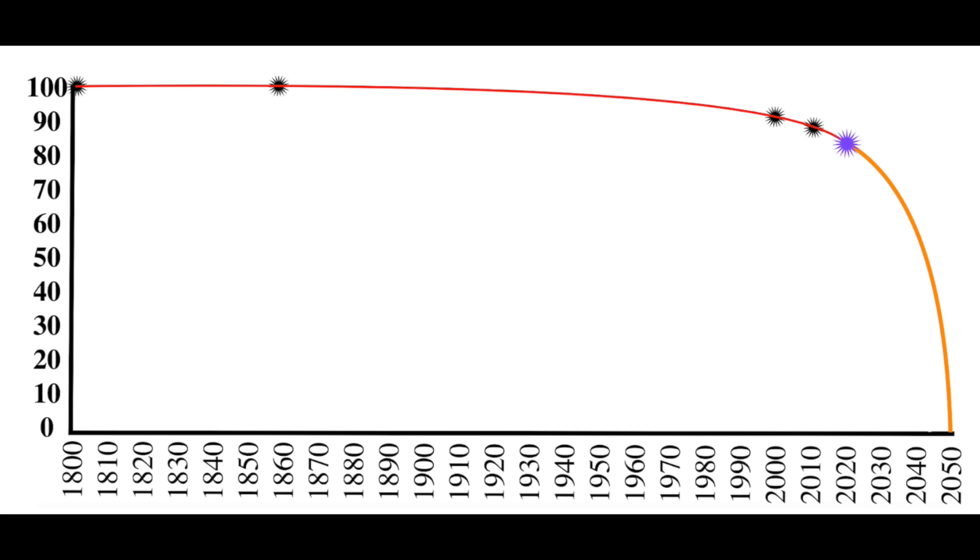Not only does the math give us this tipping point curve with a scary outcome in the next two decades, but the two most important studies on these magnetic shifts tell us, first, they can happen in as little as 80 years, which means we are already in the danger zone given that our current one has been ongoing for more than 160 years.